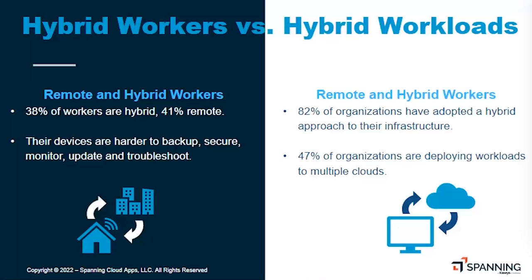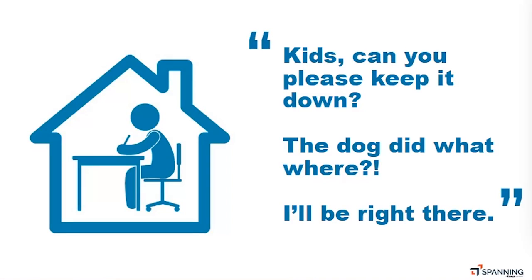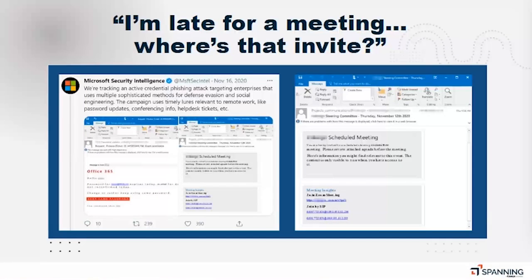You've got hybrid workloads and hybrid workers converging. It's easy to blame the worker, but consider: someone could be working from home with kids around, juggling things, about to jump into a meeting, distracted by chaos at home — and they accidentally click on a malicious link. It said 'steering committee,' something they expected, but it was actually a phishing link. They've gone to the wrong site, and they're going to be exploited — potentially a cross-site scripting attack.